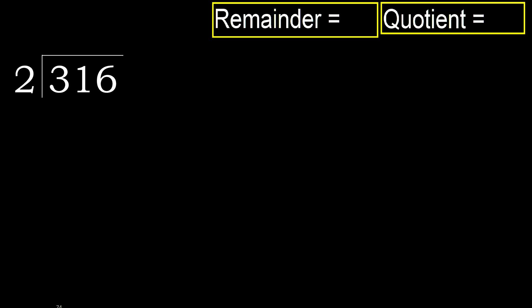316 divided by 2. 3 is not less, therefore with 3: 2 multiplied by which number is nearest to 3 but not greater? 2 multiplied by 2 is 4 — 4 is greater. 2 multiplied by 1 is 2 — 2 is not greater. 3 minus 2 is 1.